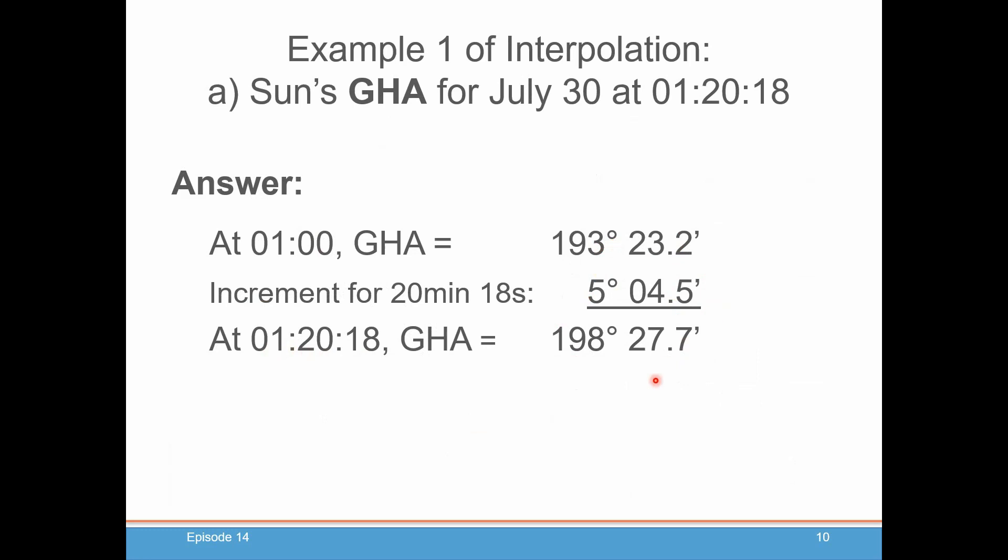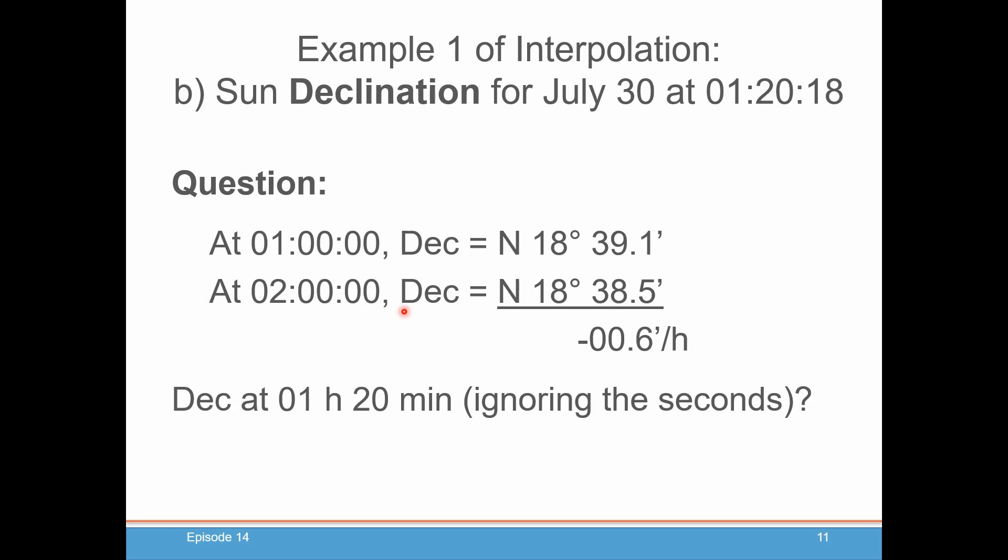Now, let's go for declination. At 0 100 hours, it was 18 degrees, 39.1 minutes. And if you had done the subtraction from the declination of 200 hours, we would see it went down by 0.6 minutes per hour. What was it at exactly 0 100, 20 minutes and 18 seconds? The way you do that, because declination changes so slowly, you can just basically ignore the seconds and just look at the minutes.